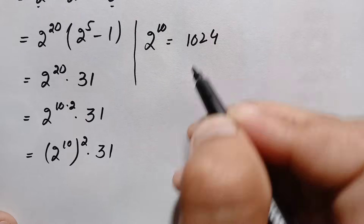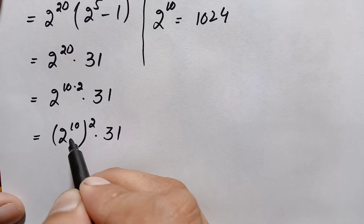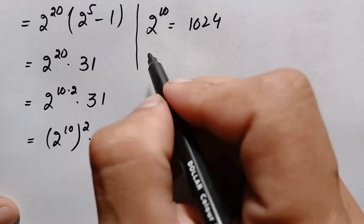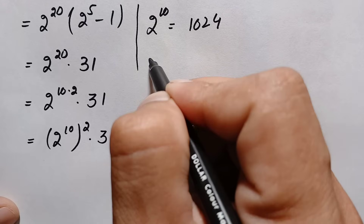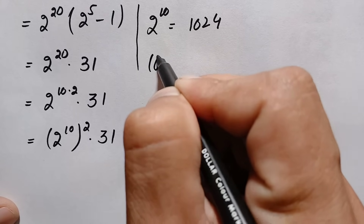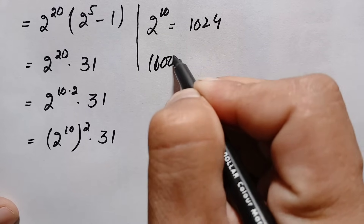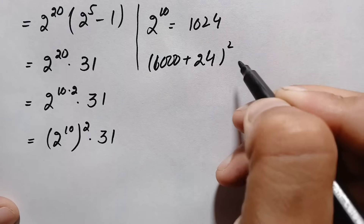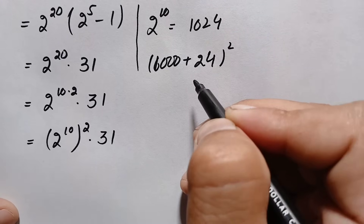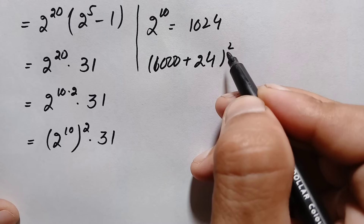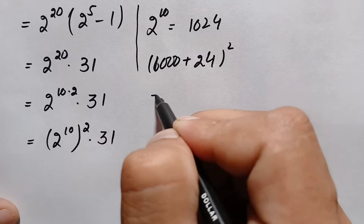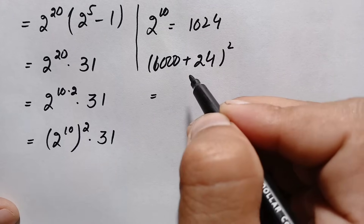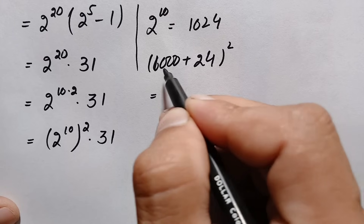Now we take the square of 1024 since we need (2 raised to power 10) squared. We write 1024 as the sum of 1000 plus 24, then apply the algebraic identity (a plus b) whole squared, which equals a squared plus 2ab plus b squared.